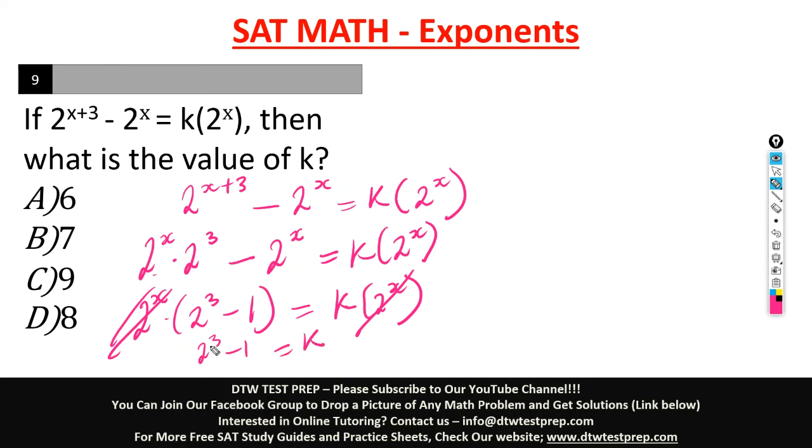So from here, we can solve. Alright, so 2 raised to the power of 3 is 8 minus 1 equal to k. And what is 8 minus 1? That's 7. So 7 is what's equal to k or k is equal to 7. Alright, so that's the value of k. And our answer here is B.